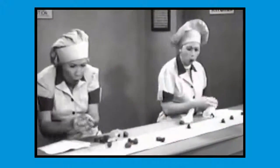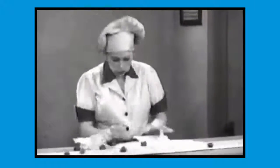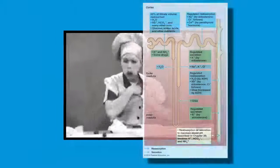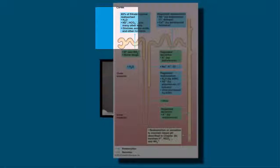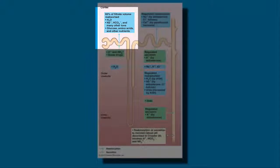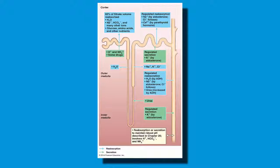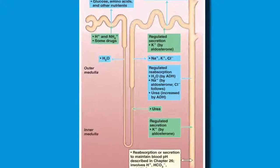So in a healthy individual, 65% of water and sodium will be reabsorbed at the proximal convoluted tubule, and all of the nutrients and vitamins in most of the ions as well. Let's move on down the tubule to talk a little bit more about reabsorption.